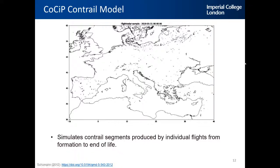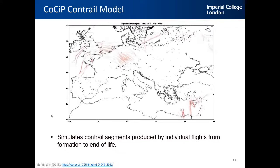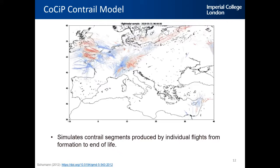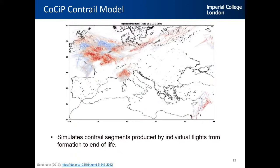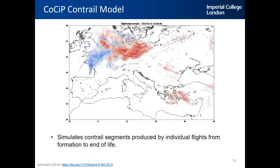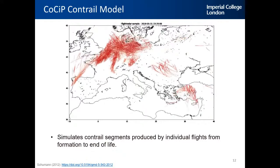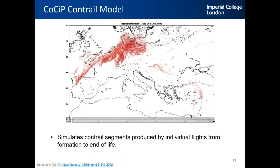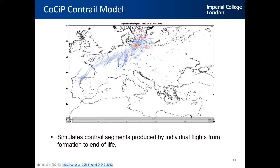The contrail model we use is the Contrail Cirrus Prediction model, CoCiP, a state-of-the-art contrail model developed by the German Aerospace Centre. It simulates contrail segments produced by individual flights from formation to end of life. Here you can see example outputs over Europe, showing how contrails form and evolve over time. Blue dots indicate cooling contrails and red dots indicate warming contrails — with different factors influencing whether a contrail is warming or cooling, as I'll describe in the next few slides.